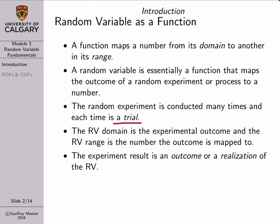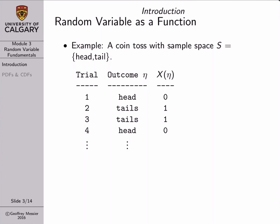Let's consider a coin toss as our random experiment. Our universal set contains the outcomes head or tails — so not a number. Let's assume that we conduct the experiment a number of times; in this case I've shown four trials. The outcome, which I'm representing by the Roman letter eta, would be head, then the second time we do the experiment it's tails, then tails, then a head, and so on. We can do this any number of times.